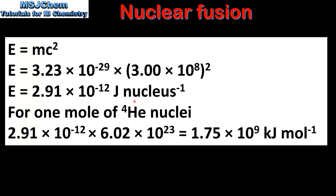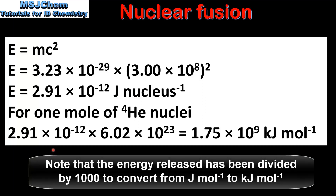This is the amount of energy released for the formation of one helium nucleus. To calculate the energy released for one mole of helium nuclei, we multiply the value for one nucleus by the Avogadro constant. This gives us a value of 1.75 times 10 to the 9 kilojoules per mole.